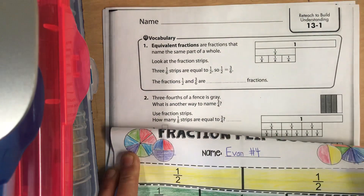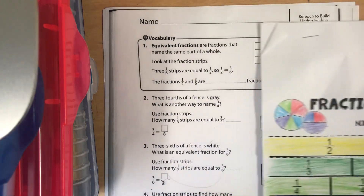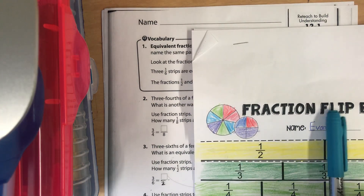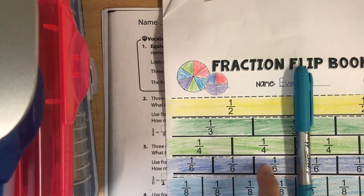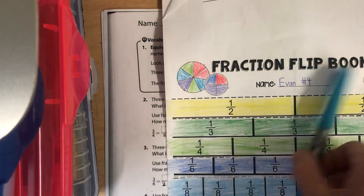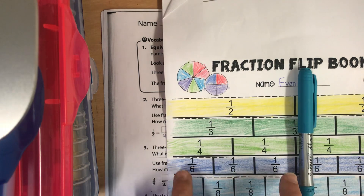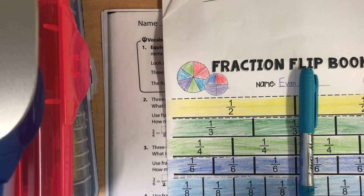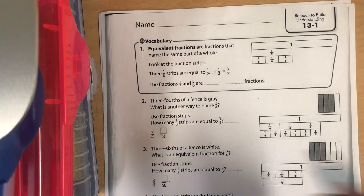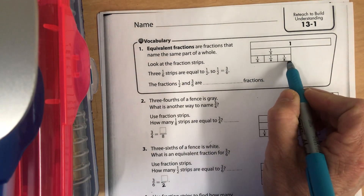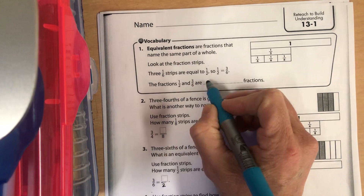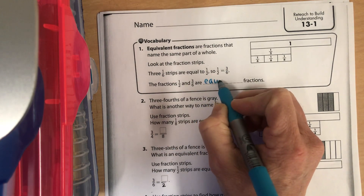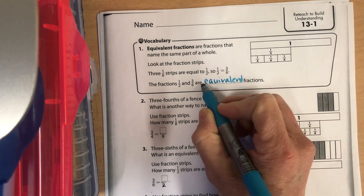Here is 1 half. If we take our pencil and line it up right where the 1 half ends, we can see how many 1 sixths fit into 1 half. These 3 — 1 sixth, 2 sixths, 3 sixths — are the same as 1 half; they're equivalent. So 1 half is equal to 3 sixths. The fractions 1 half and 3 sixths are equivalent fractions — equivalent almost has the word 'equal' in it.